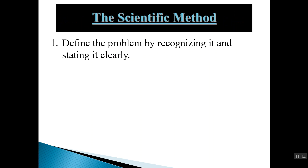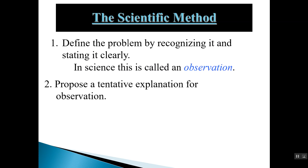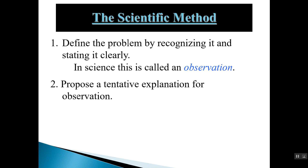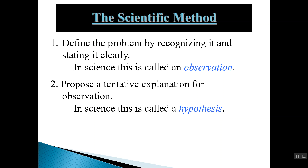The first step in the scientific method is that we define a problem by recognizing it and stating it clearly — in science we call this an observation. The next step is that we propose a tentative explanation for the observation, which we call the hypothesis. It's important to understand that it must be a reasonable explanation; you can't just put forward any idea as a hypothesis — it has to make sense.